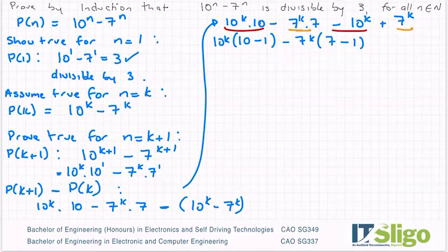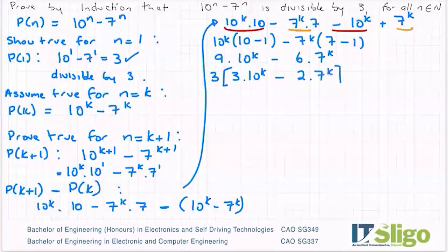So 10 minus 1 is 9. That's 9 by 10 to the power of k minus, 7 by 1 is 6 by 7 to the power of k. And I'm trying to show this is divisible by 3. So it makes sense then to factor out a 3. Because if I can factor out a 3 all the way across, the whole expression is divisible by 3. So I will get 3 by 10 to the power of k there and I'll get 2 by 7 to the power of k there.